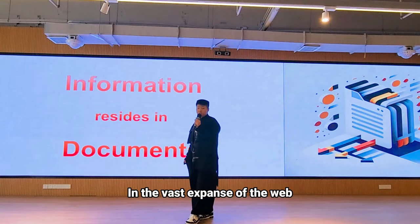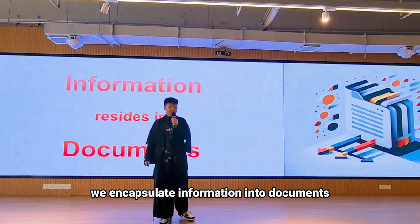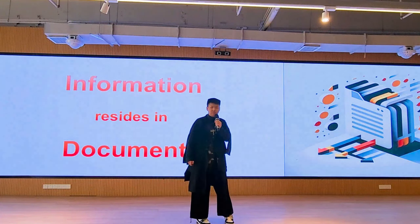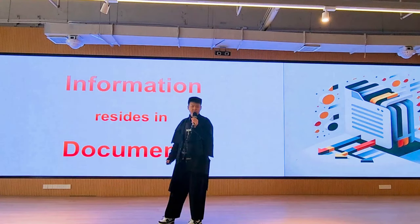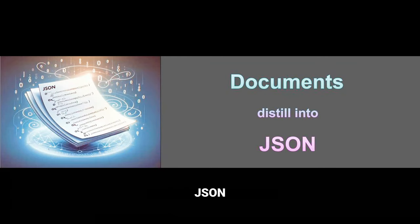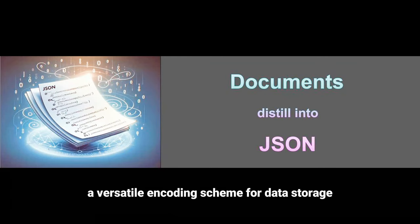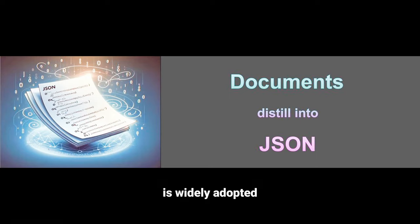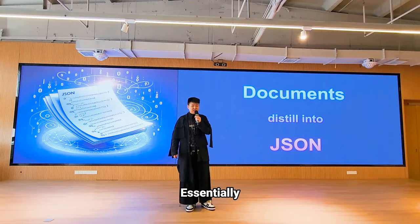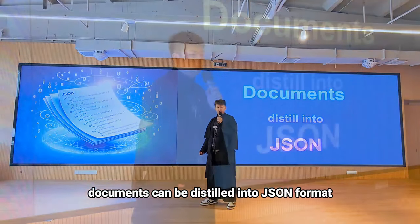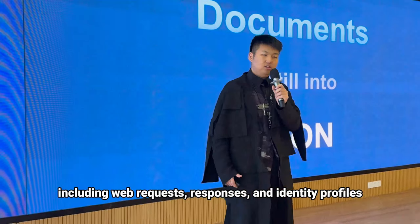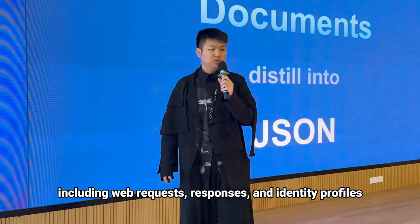In the vast expanse of the web, we encapsulate information into documents, facilitating efficient and reliable data transmission. Within these documents, JSON, a versatile encoding scheme for data storage, is widely adopted in various scenarios and applications. Essentially, almost every document can be distilled into JSON format, including web requests, responses, and identity profiles.